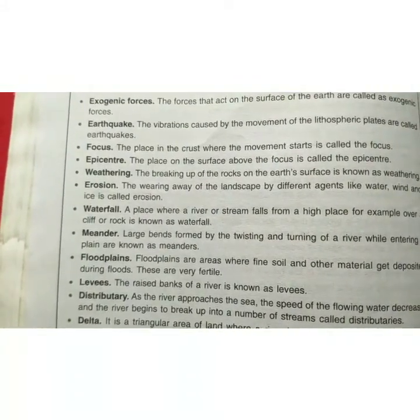Next is weathering — the breaking up of rock on the earth's surface is known as weathering. Erosion — the wearing away of the landscape by different agents like water, wind, and ice is called erosion. Waterfall — a place where a river or stream falls from a high place, for example over a cliff or rock, is known as a waterfall.